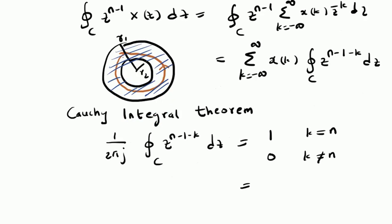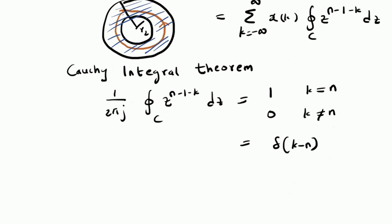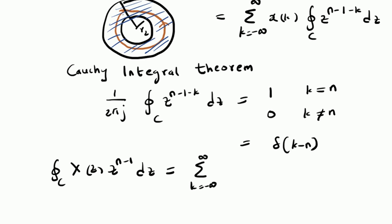We can write this closed contour integral as the unit sample function delta of k minus n. So we replace this integral with 2 pi j multiplied by delta of k minus n. Therefore, the equation can be written as: the integral of X of Z times Z power n minus 1 dz equals summation over k from minus infinity to plus infinity of 2 pi j times delta of k minus n times X of k.